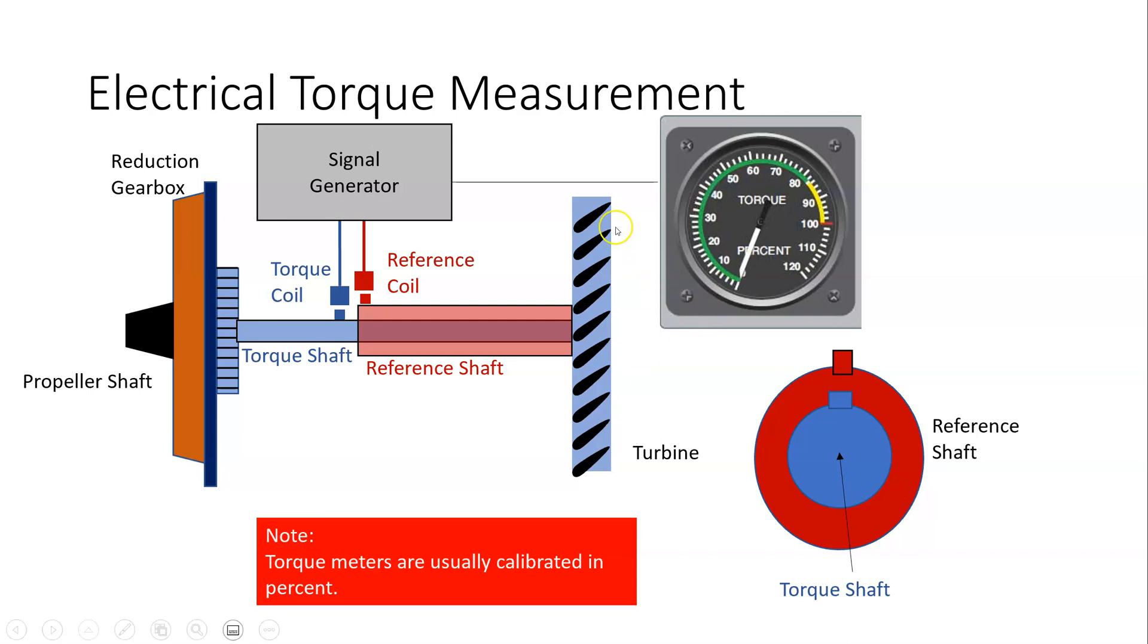So here I have my power turbine with a reference shaft and a torque shaft. This torque shaft is going to the reduction gearbox and that's driving my propeller. On the torque shaft I have a magnet and on the reference shaft I also have a magnet. And opposite these magnets is a coil.